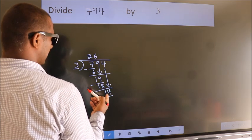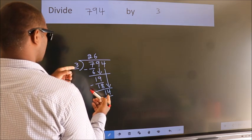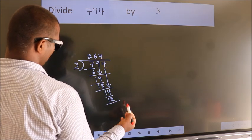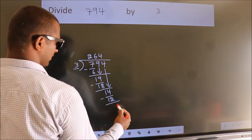A number close to 14 in the 3 table is 3 times 4 is 12. Now we subtract. We get 2.